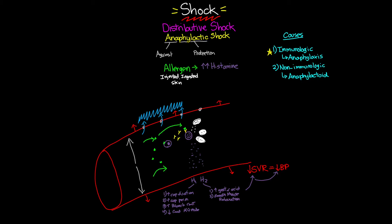For the non-immunologic cause — the anaphylactoid response — the important distinction is that unlike anaphylaxis, it doesn't require an initial sensitization. The allergen enters the bloodstream and interacts directly with a receptor on the mast cell, triggering the same cascade of cytokines, white blood cell recruitment, and massive histamine release. Critically, the anaphylactoid reaction can happen on the first exposure to a particular allergen, whereas anaphylaxis requires a second exposure after initial sensitization.